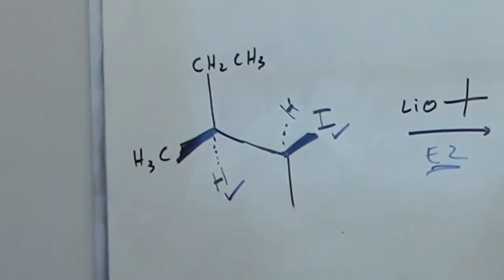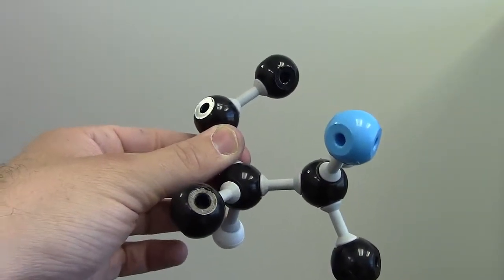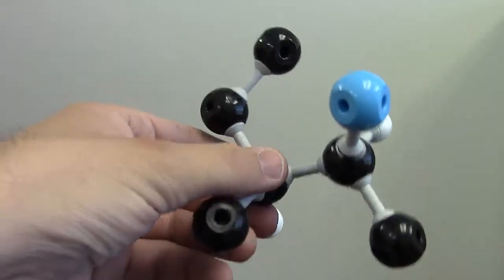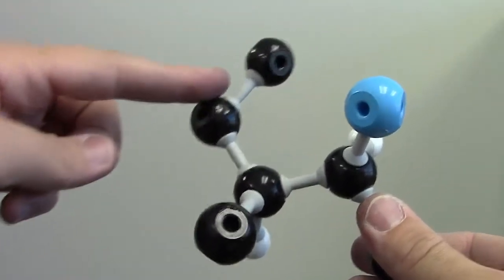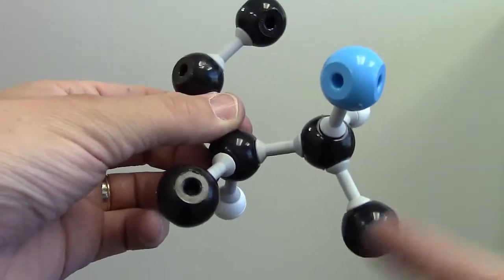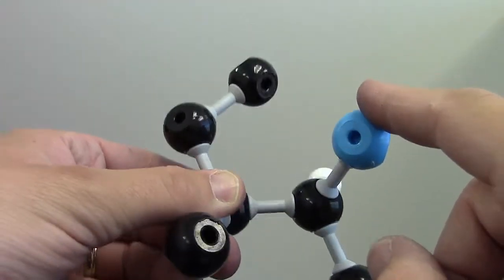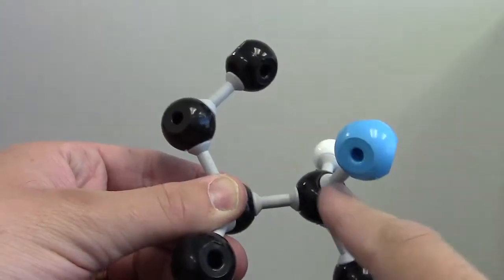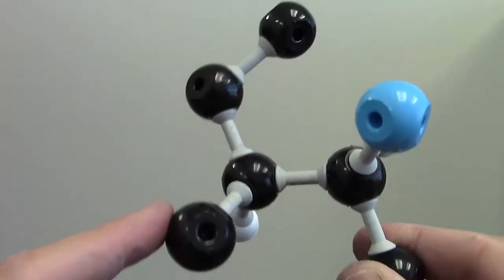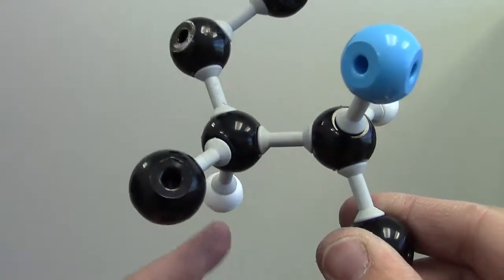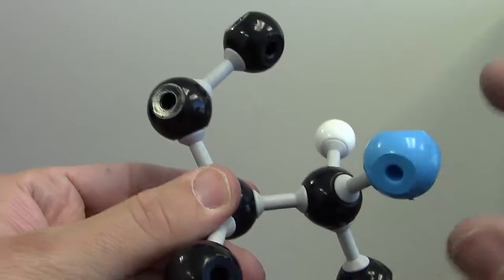I'll show you that more clearly with a handmade model. Here's a model representing the molecule we were just looking at on the board. I've omitted unnecessary hydrogens to make it less confusing. This is the ethyl group up here, this is the methyl pointing down, and the blue ball represents the iodine — which, as indicated by a wedged bond on the board, is pointing three-dimensionally toward us. The methyl group is also pointing toward us as shown by a wedged bond, while there is a hydrogen on the other carbon pointing three-dimensionally away from us, indicated by a dashed bond.